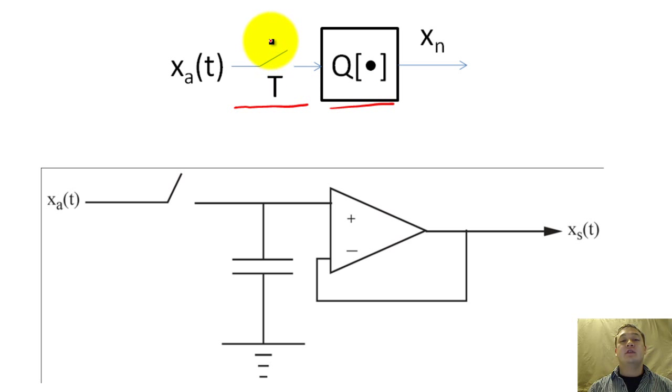The switch can be implemented as follows. The switch is normally created with a transistor controlled by a clock with period T.